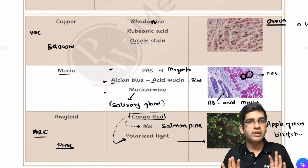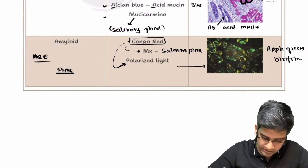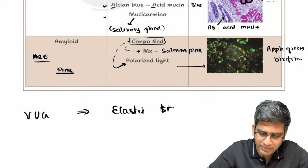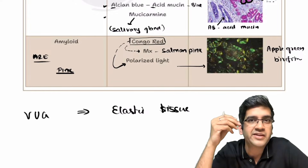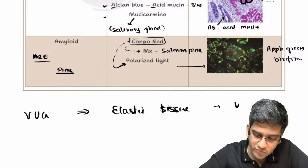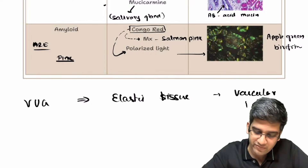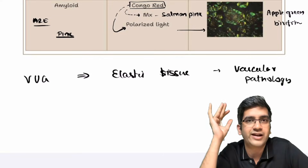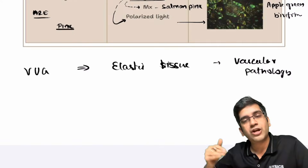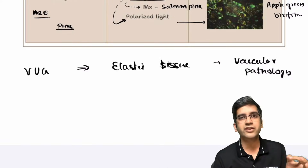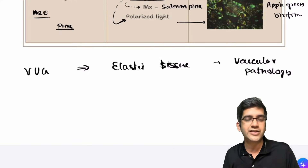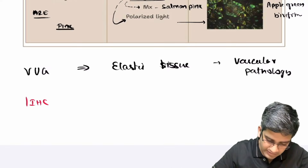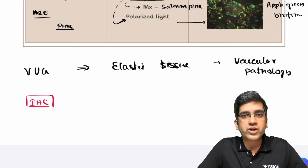There are multiple additional stains. VVG (Verhoeff-Van Gieson) is primarily a stain for elastic tissue, most useful in vascular pathology — for example in aneurysms or dissections where you need to visualize the internal and external elastic laminae. We will keep adding stains as we go into systemic pathology — lung, stomach, kidney — building on these basics so our learning is complete.